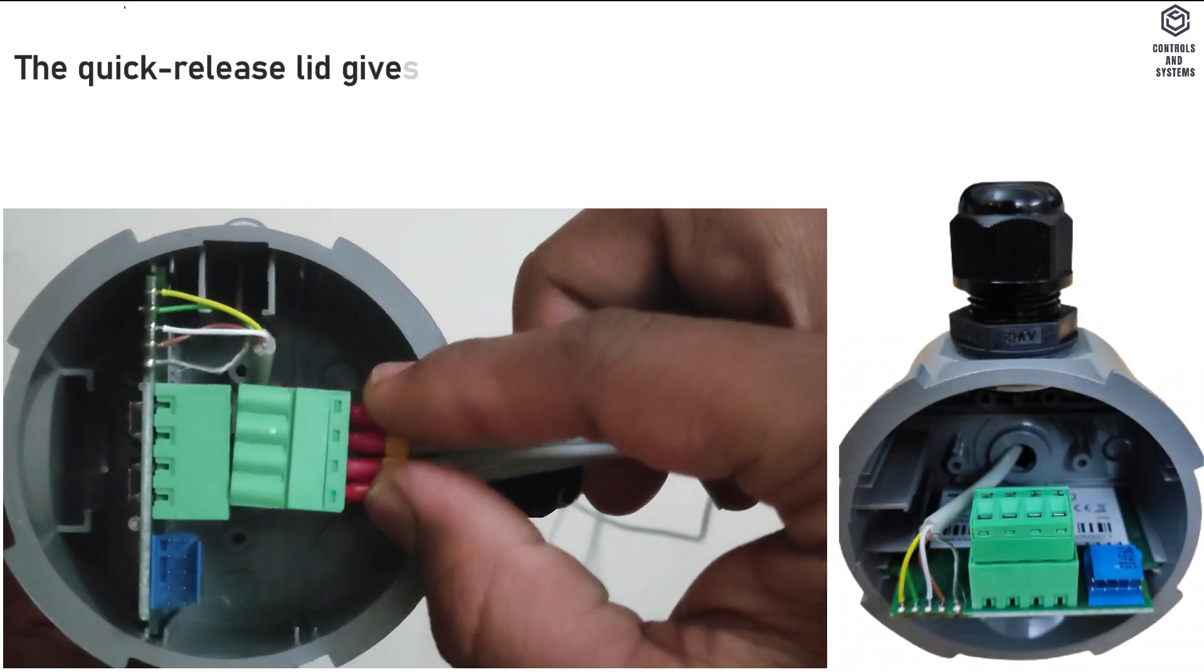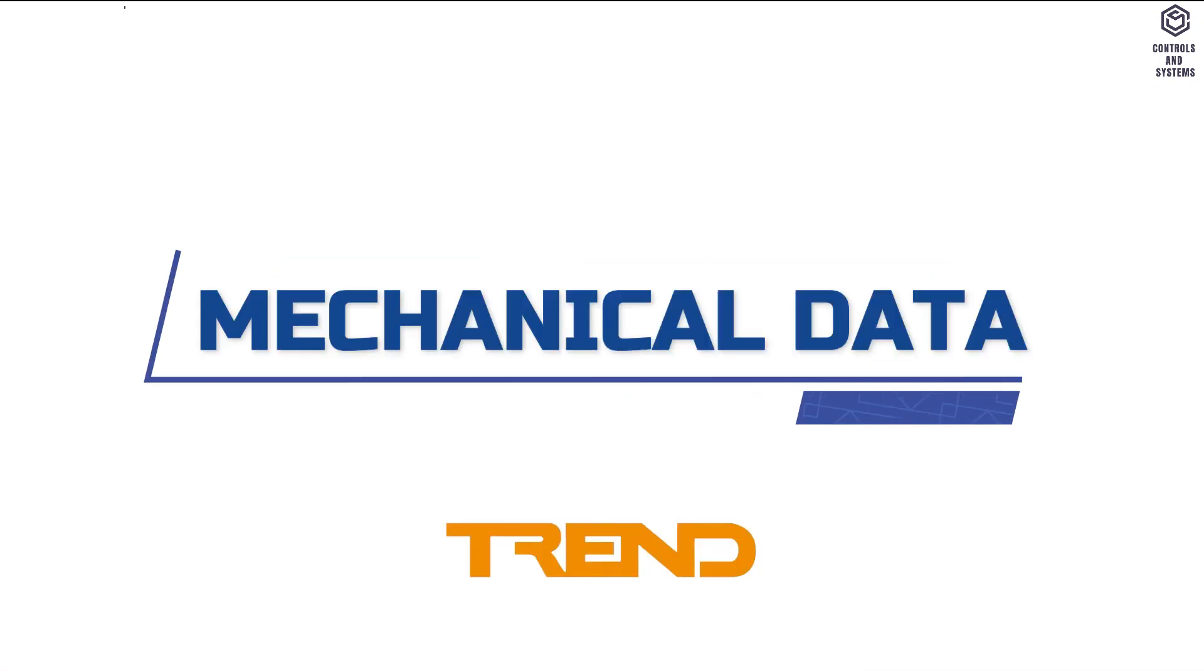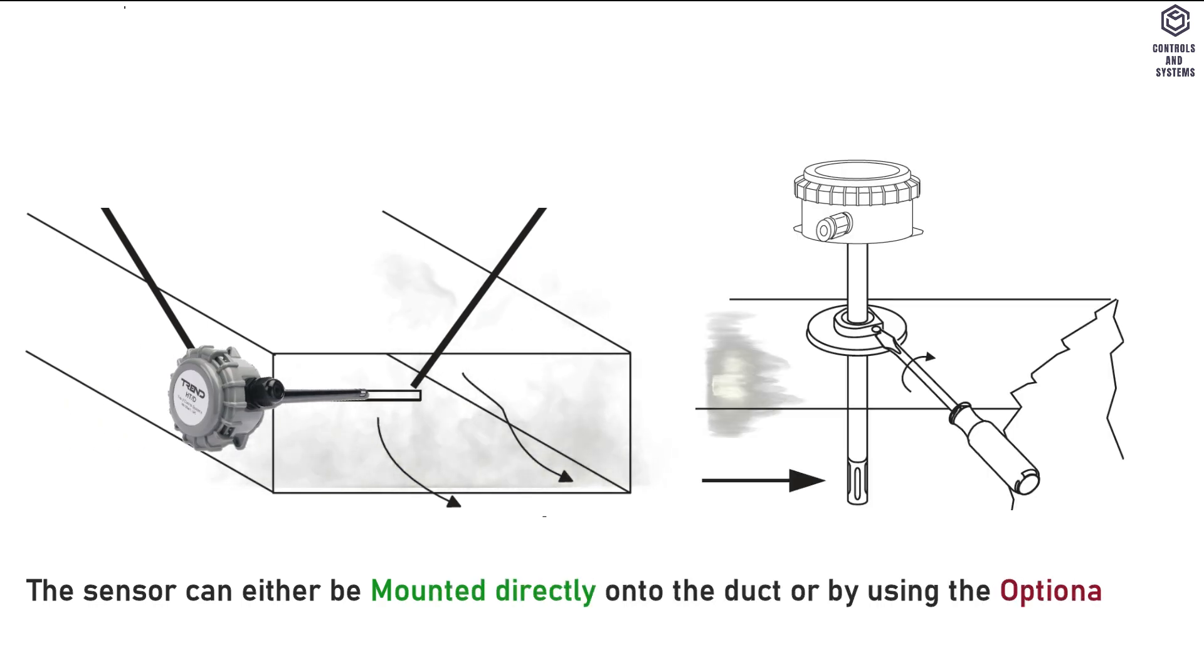The quick release lid gives access to a PCB featuring a two-part screw terminal block. Mechanical data: the sensor can either be mounted directly onto the duct or by using the optional mounting flange.